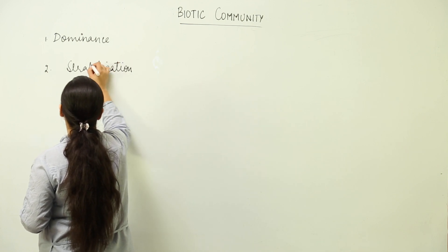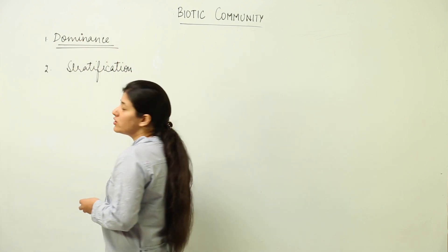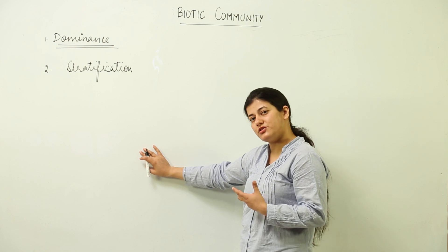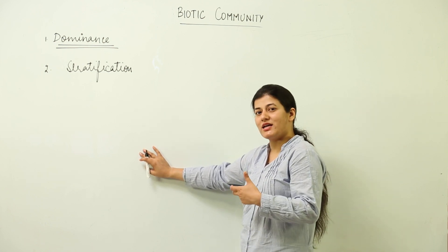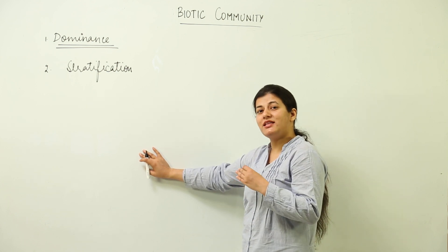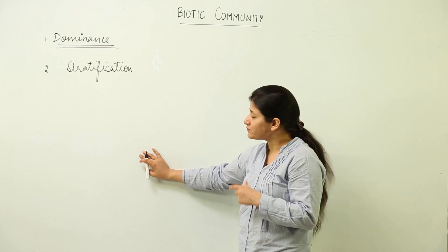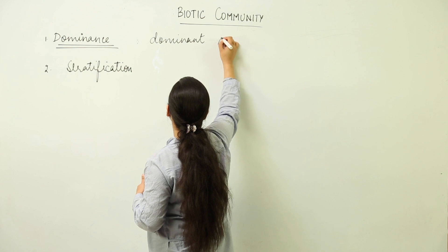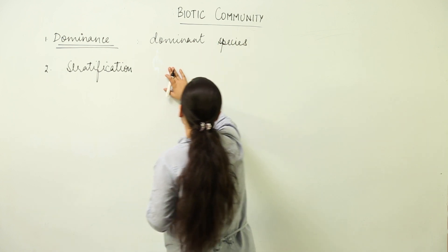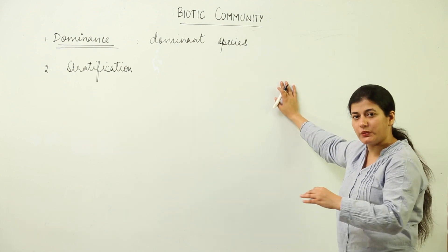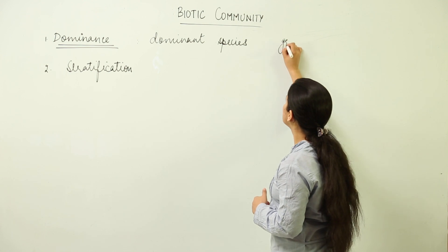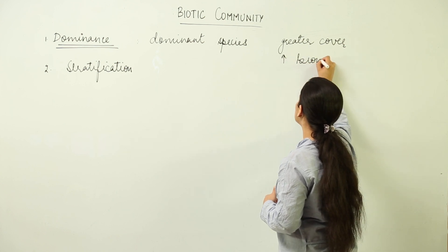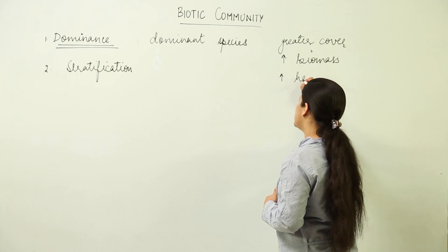Within a biotic community we are going to see what ecological dominance is all about. When we say that a community has a dominant species, it refers to a species which has marked itself in a way that it has a greater number of organisms, making other species subordinate. The dominant species has greater cover, greater biomass, and greater height if we talk about plants.